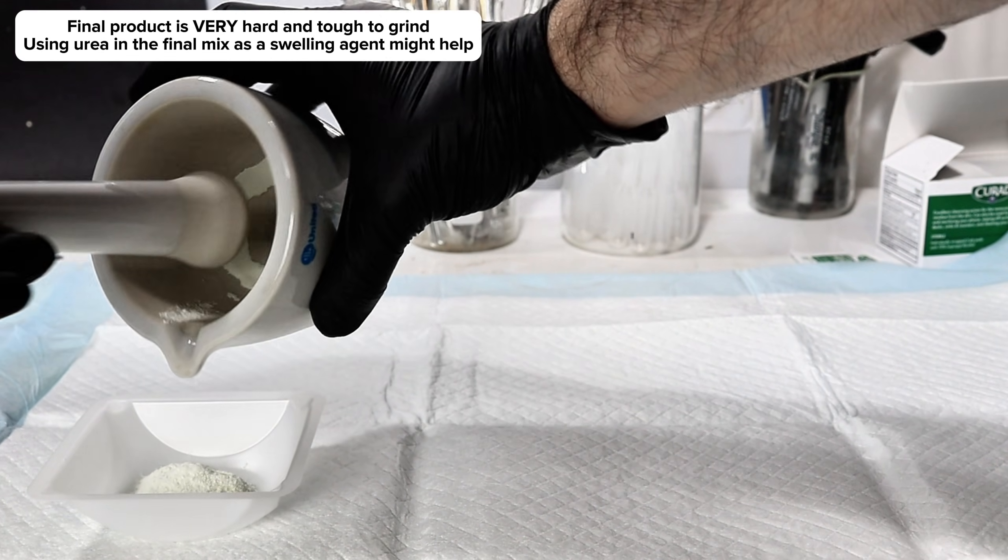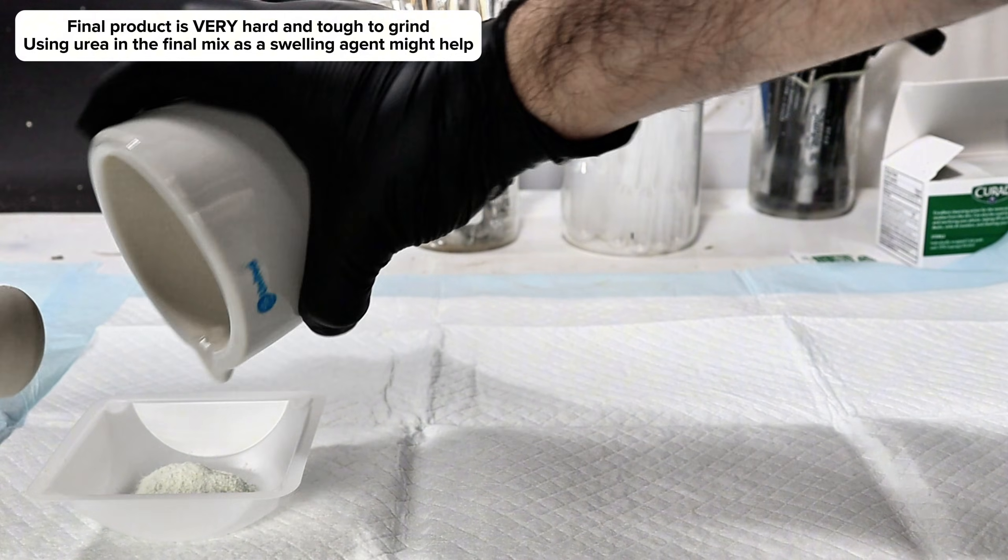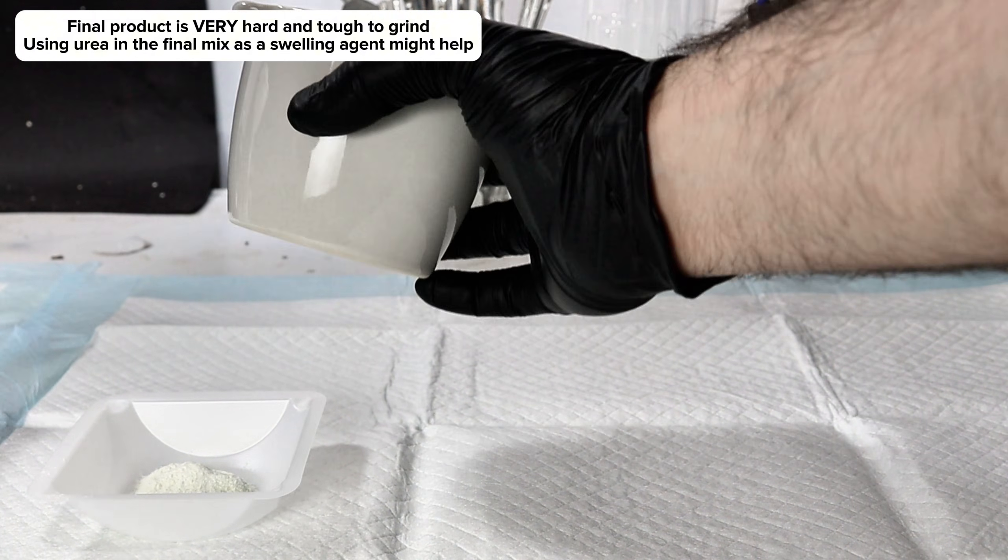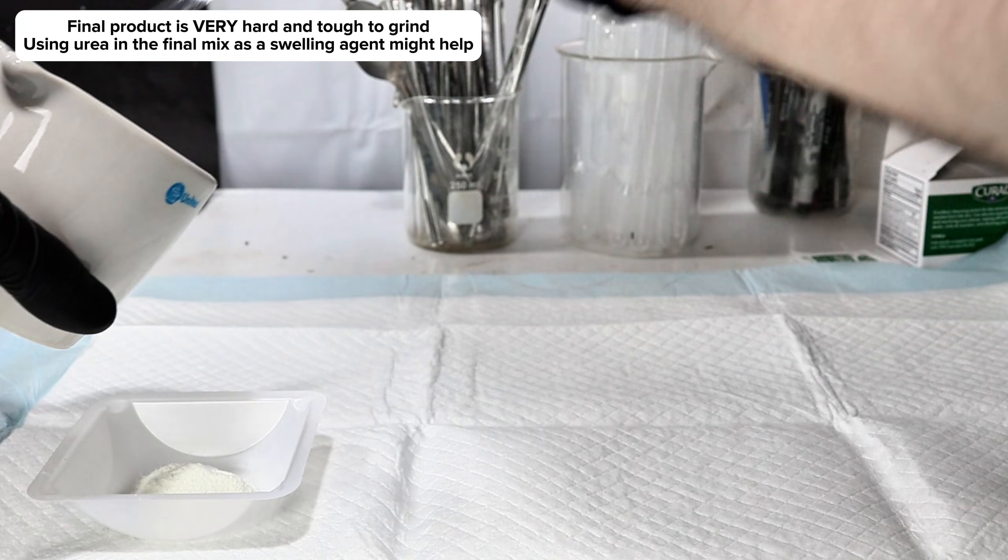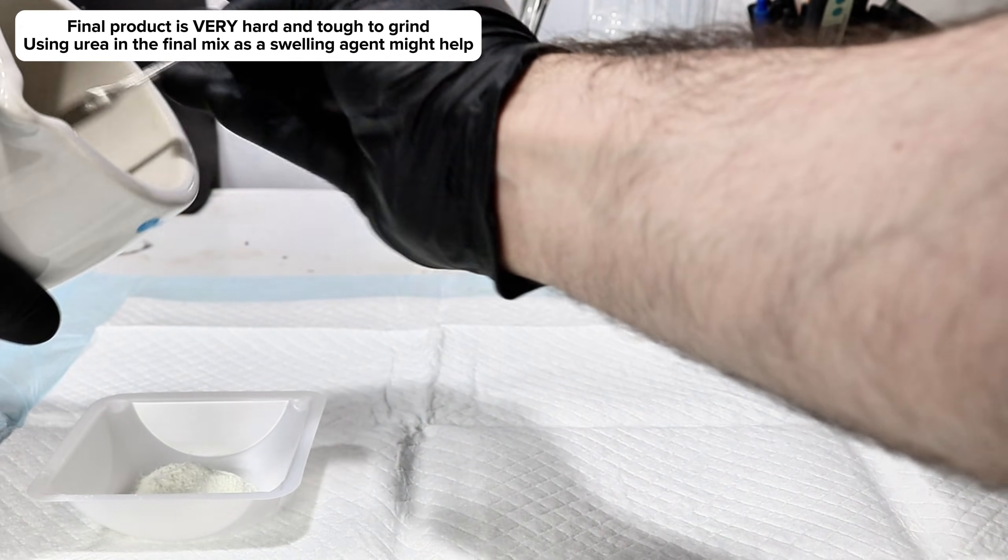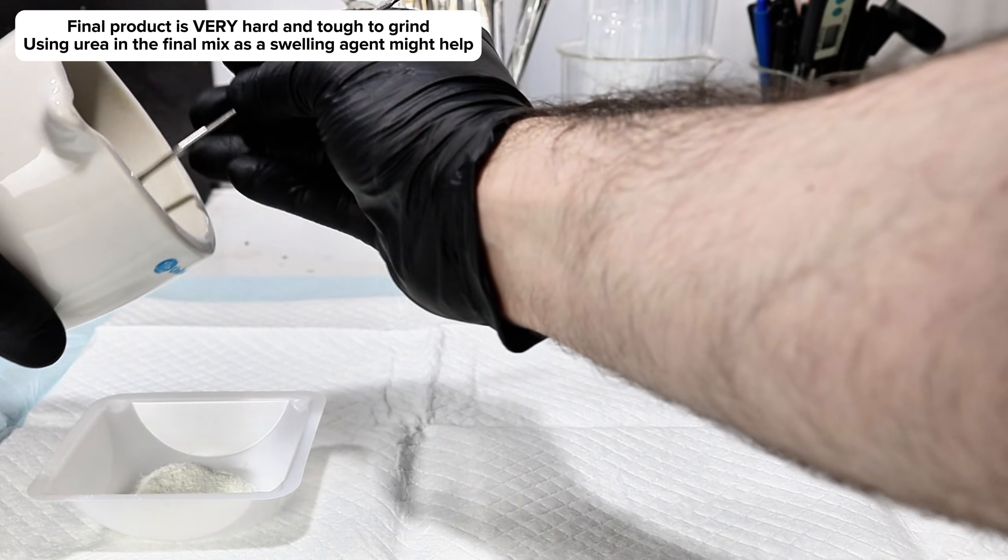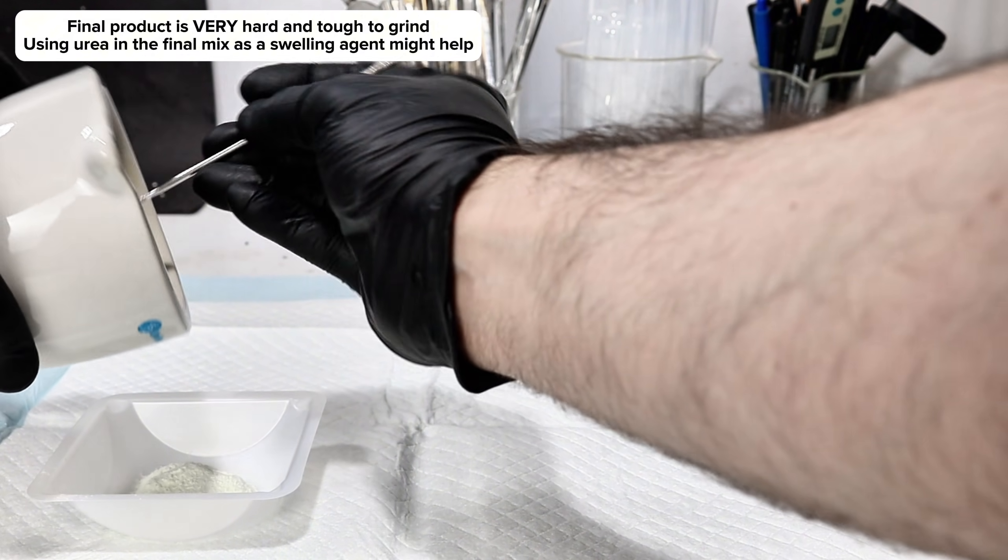In the course of my research, I did come across a method to make the final mass easier to powder by the addition of urea as a swelling agent prior to the final firing, but I wanted to remove any unnecessary variables from this process given I was already having such a hard time with it.